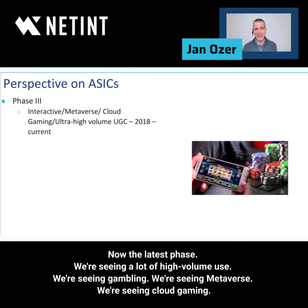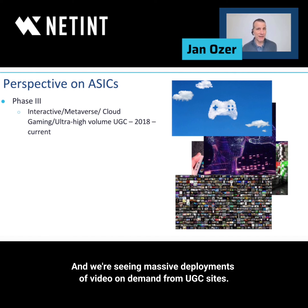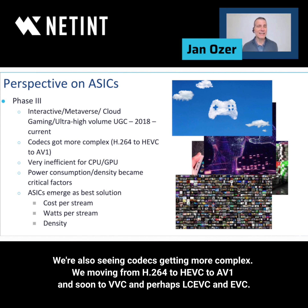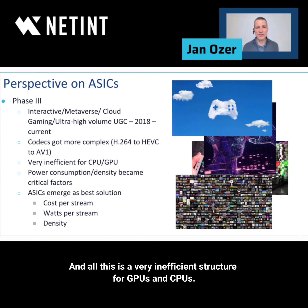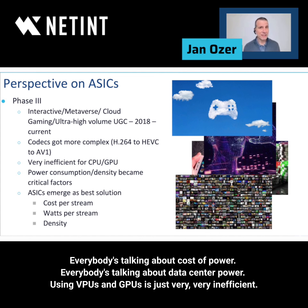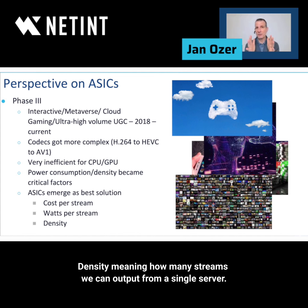The latest phase is we're seeing a lot of high-volume use — gambling, metaverse, cloud gaming, and massive deployments of video-on-demand from UGC sites. We're also seeing codecs getting more complex — from H.264 to HEVC, to AV1, and soon to VVC, and perhaps LCEVC and EVC. All this is very inefficient for GPUs and CPUs. At the same time, power consumption and density are becoming critical factors. Using CPUs and GPUs is just very, very inefficient. This is where ASICs emerge as the best solution on a cost-per-stream, watts-per-stream, and density basis — density meaning how many streams can be output from a single server.